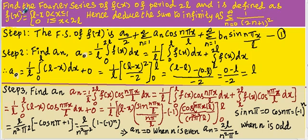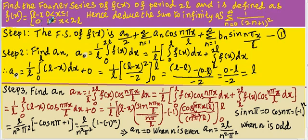Students, the next problem is: find the Fourier series of f(x) of period 2L, defined as f(x) = L minus x for 0 < x ≤ L, and f(x) = 0 for L ≤ x < 2L.